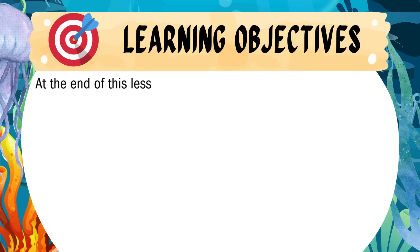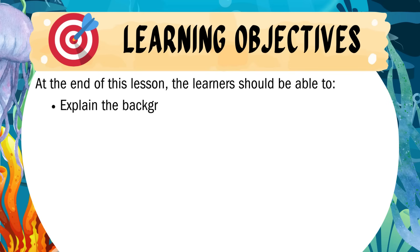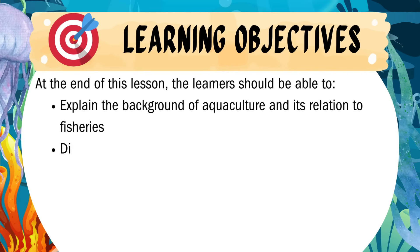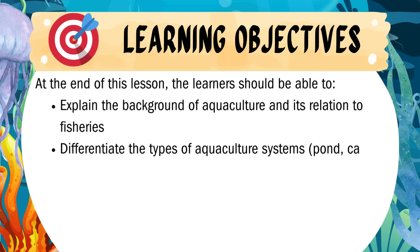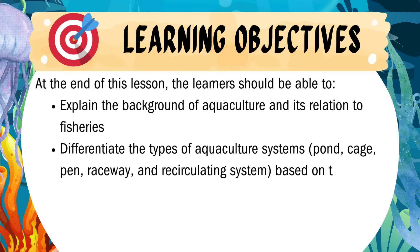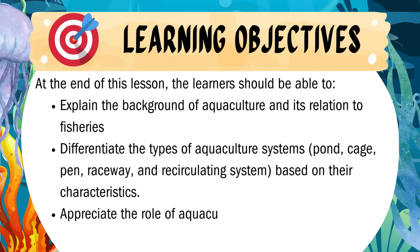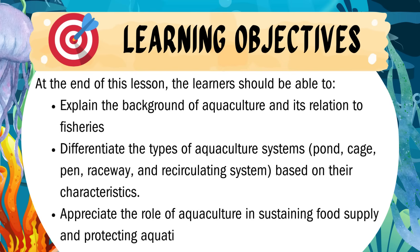Learning Objectives: At the end of this lesson, the learners should be able to: explain the background of aquaculture and its relation to fisheries; differentiate the types of aquaculture systems — pond, cage, pen, raceway, and recirculating system — based on their characteristics; and appreciate the role of aquaculture in sustaining food supply and protecting aquatic resources for future generations.